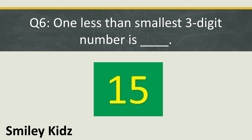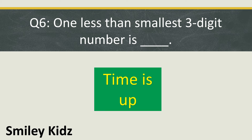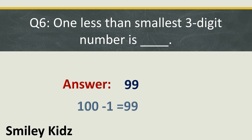Question number 6: One less than the smallest three-digit number is... Your time starts now. Your time is up. The right answer is 99. The smallest three-digit number is 100. One less than 100 is 100 minus 1, which equals 99.